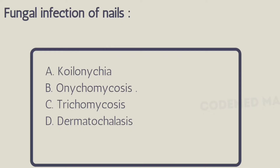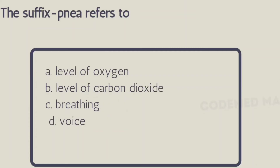The right answer is Option B, onychomycosis. Here the term 'onyc' means nail and 'mycosis' means fungal infection. Next question: the suffix '-pnea' refers to — Option A: level of oxygen, Option B: level of carbon dioxide, Option C: breathing, Option D: voice. The right answer is Option C, breathing.